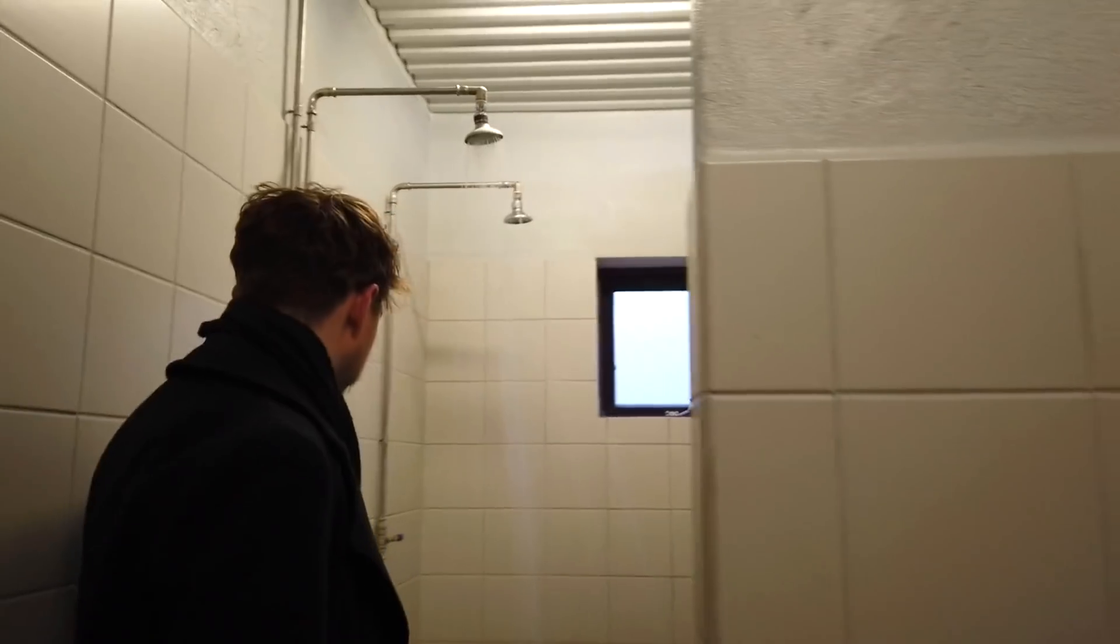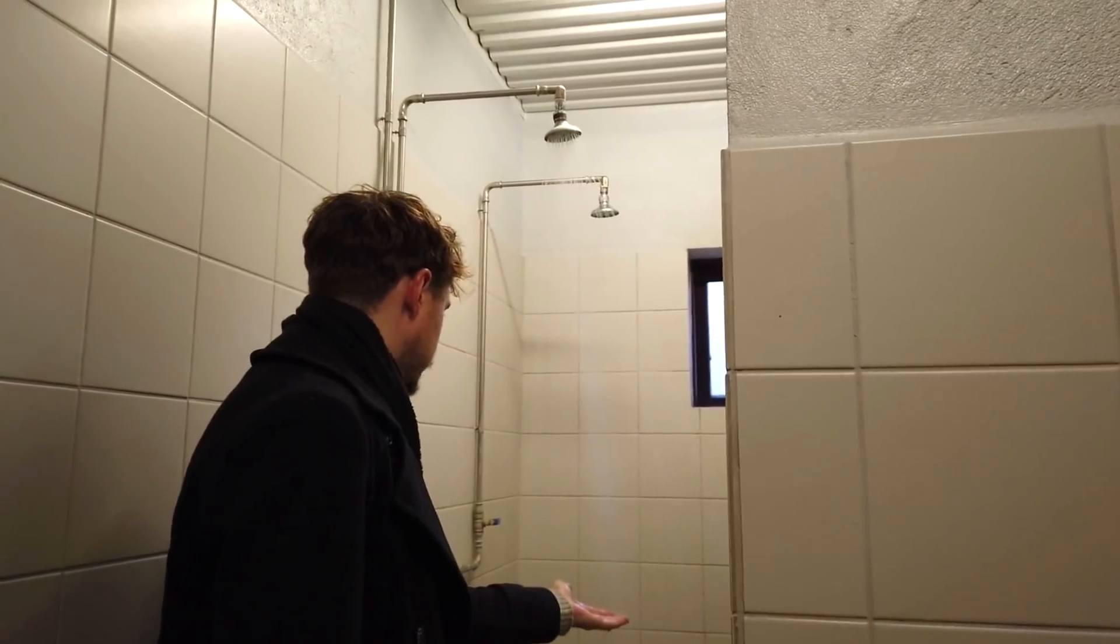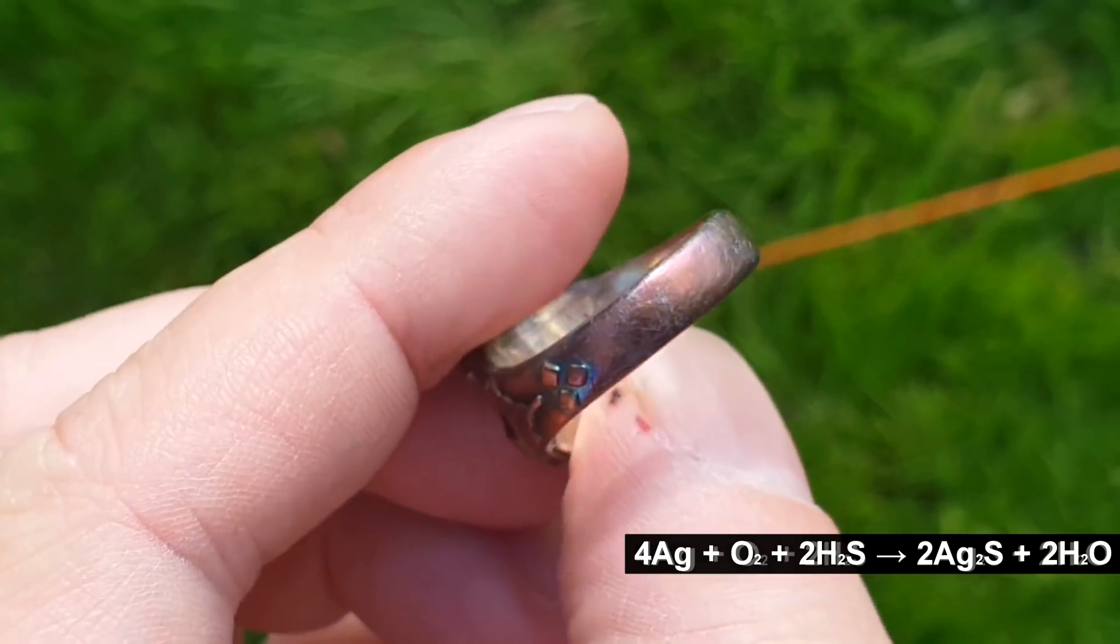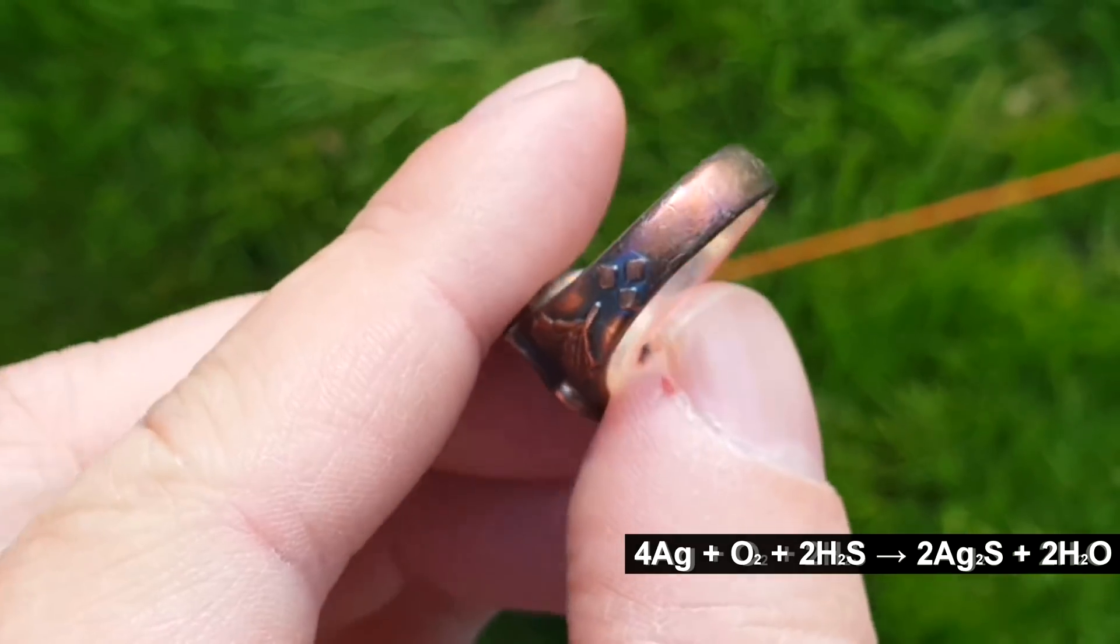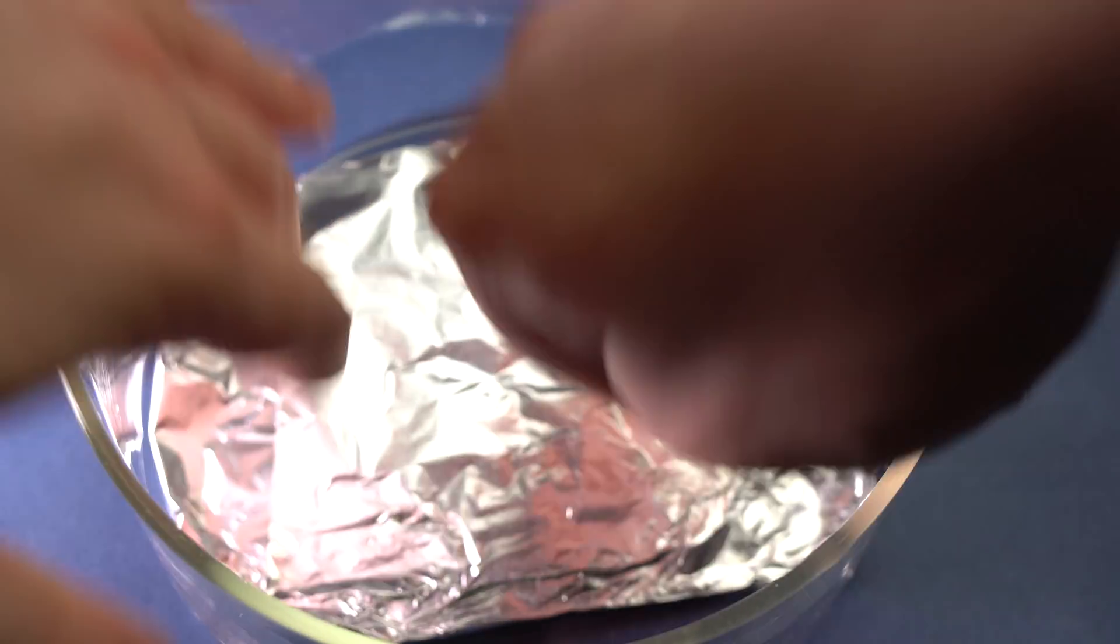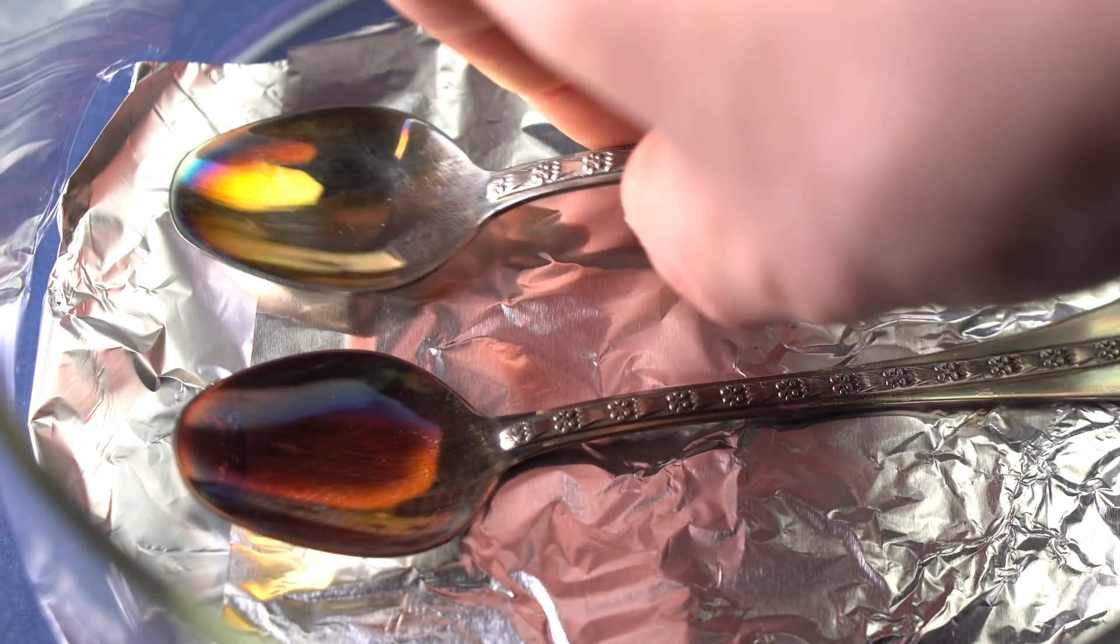And my friend's silver ring tarnished just 10 minutes after he had taken a shower. There is one electrochemical trick which can help remove tarnish from silver items.